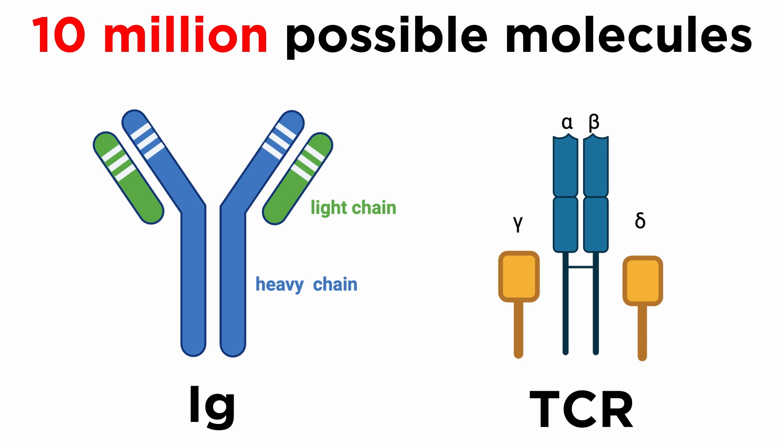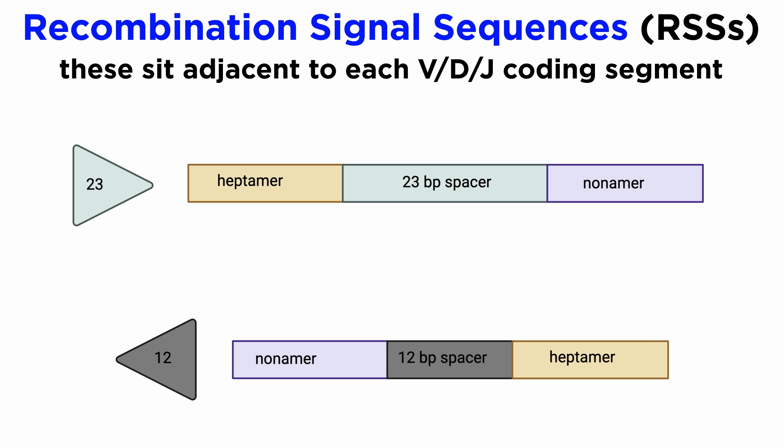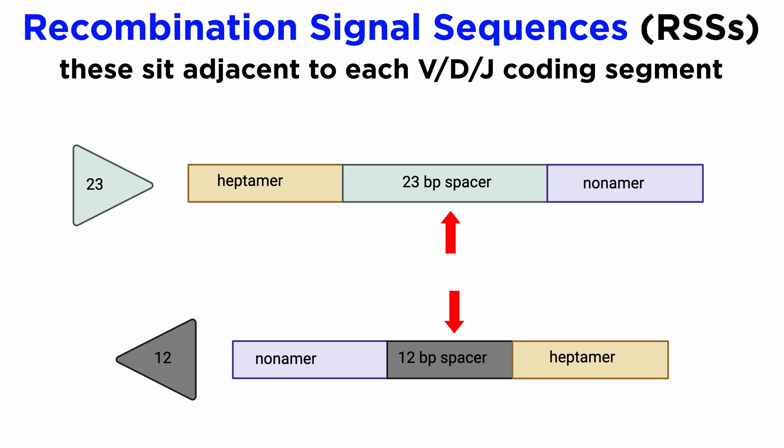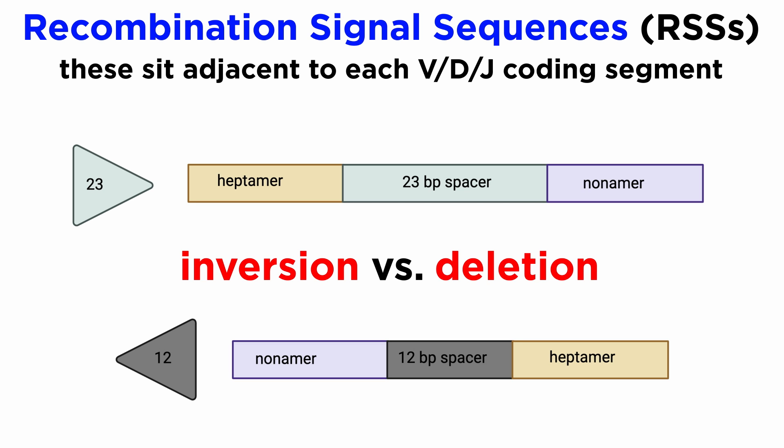The number of possible IG or TCR molecules has been estimated to be well above 10 million. This feat is accomplished by a highly regulated and well-coordinated set of reactions that begins with cleaving DNA within specific, well-conserved recombination signal sequences (RSSs) that are adjacent to each V, D, and J coding segment. RSSs consist of conserved heptamer and nonomer elements, separated by 12 or 23 nucleotides of less conserved spacer sequences, and their relative orientation determines whether the reaction proceeds by inversion or by deletion.